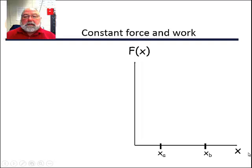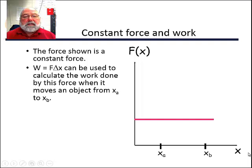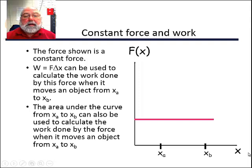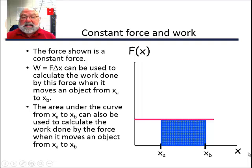Well, here's a graph. It has force on the y-axis and displacement on the x-axis. And we're going to apply a constant force denoted by the little red line. And we can say that work is equal to force times the displacement, and we can calculate that from position A to position B. And the area under that curve from x_A to x_B, from position A to position B, can also be used to calculate the work done by the force when it moves an object from A to B.